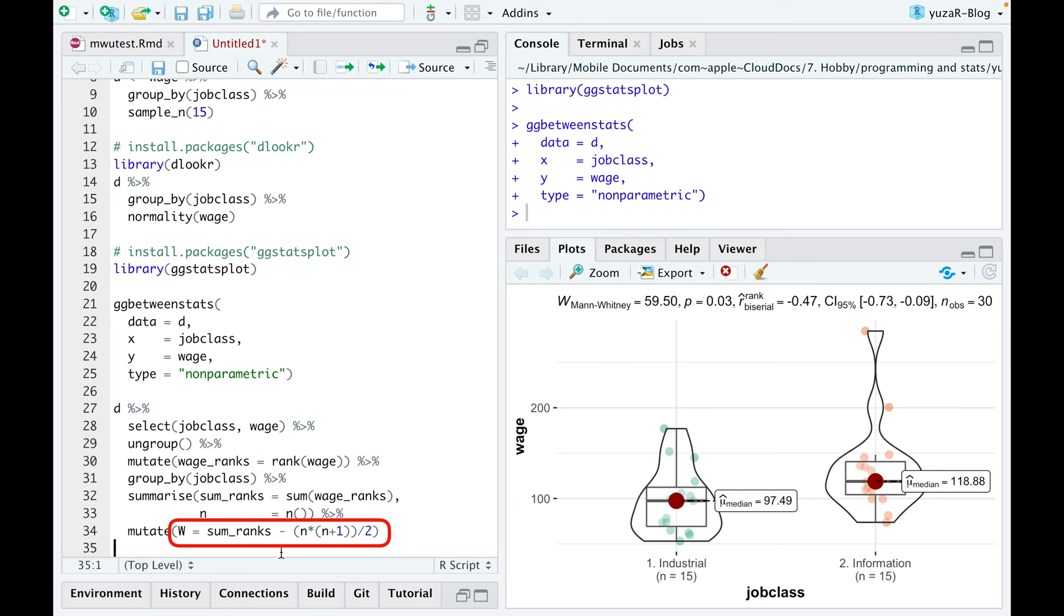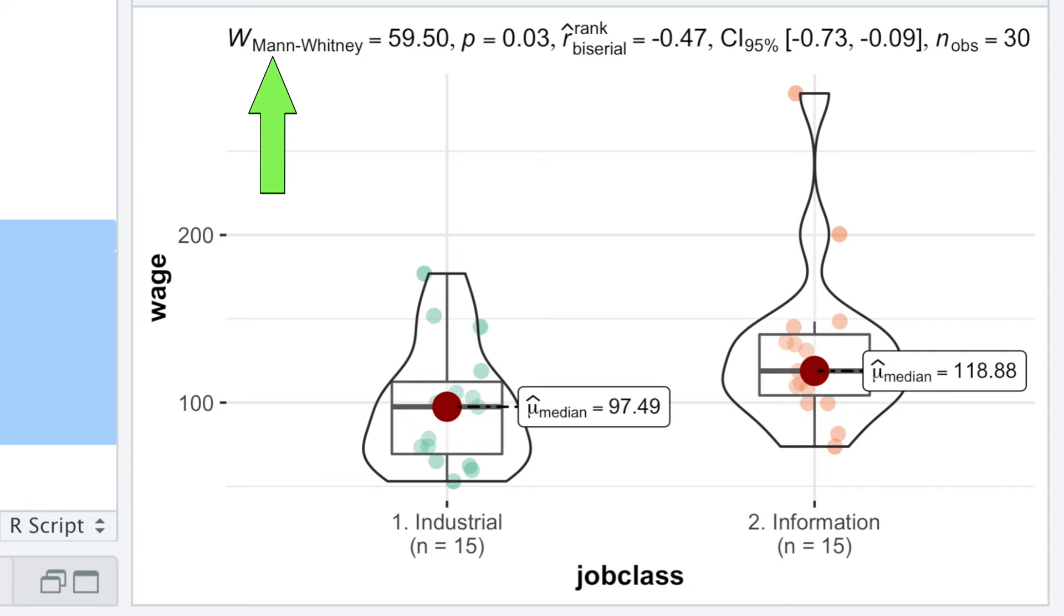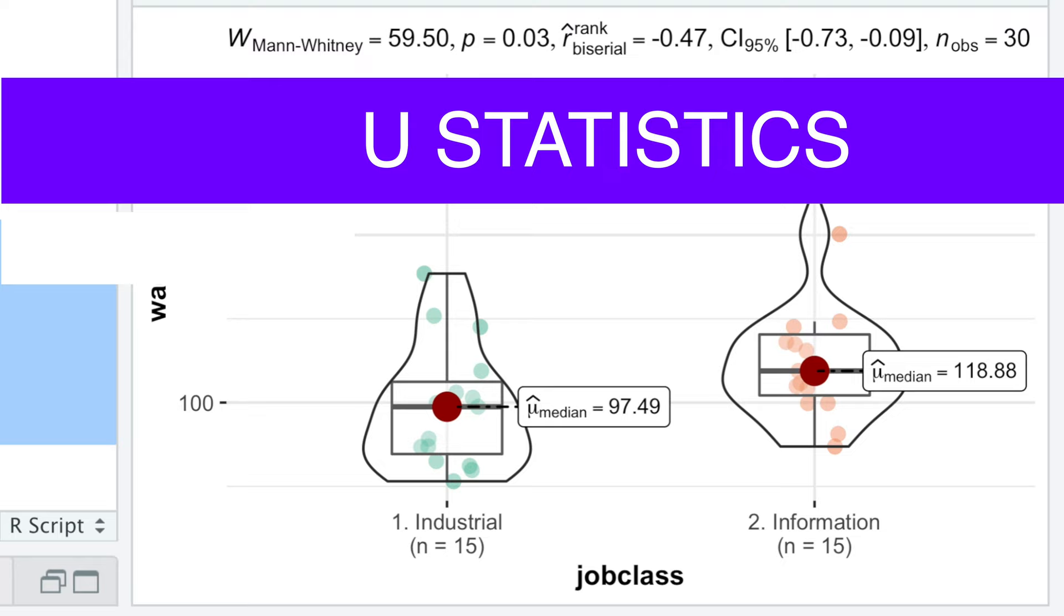And finally, sums of the ranks are then used to calculate the W-statistics, where W itself obviously originates from Wilcoxon, a scientist who developed the test at roughly the same time as Mann and Whitney. The U-statistics in Mann-Whitney U name is calculated slightly differently compared with W-statistics, but produces identical p-values.